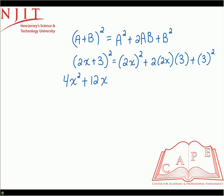So 2 times 2x is 4x times 3 is 12x. And then finally, the third term squared is 3 squared, which is just simply 9. We have no other terms to collect, there's nothing else to simplify. So here's our final answer: 4x squared plus 12x plus 9.